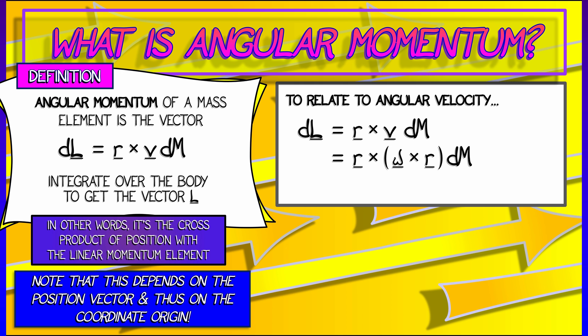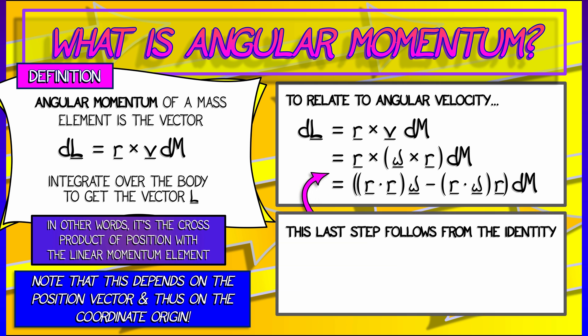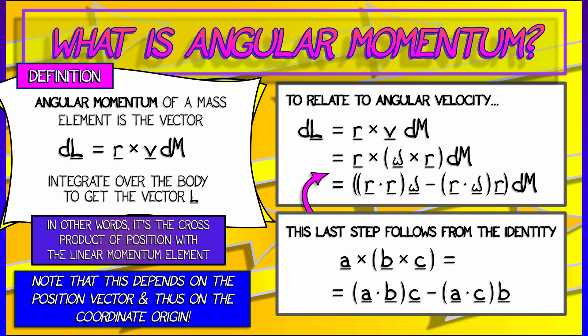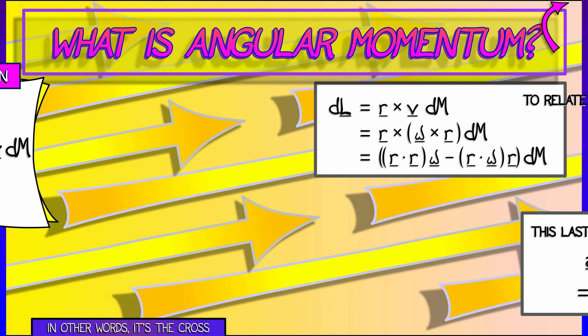So dl is r cross (omega cross r) times dm. Now we can expand that out as (r dot r) times omega minus (r dot omega) times r, all of that times dm. That last step may be a little unfamiliar to you — it follows from a standard vector identity for cross products of cross products that you may want to go back and verify if you're curious. If not, just stick with what we have: dl is (r dot r) omega minus (r dot omega) r, all of that times dm.